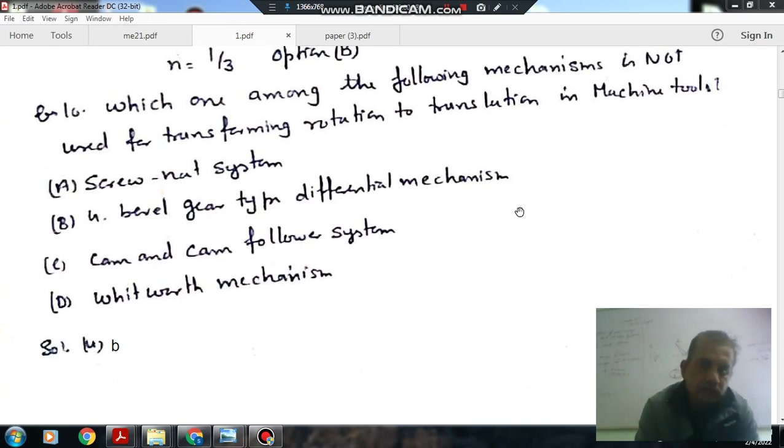Which one of the following mechanisms is not used for transforming rotation to translation in machine tools? Option A: screw nut system, B: bevel gear type differential mechanism, C: cam and cam follower system, D: worm gear mechanism.